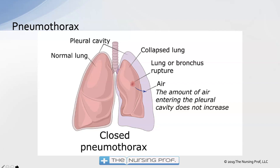What happens with a pneumothorax is we get some air into that pleural space. When air gets into the pleural space, we lose that vacuum that is pulling the lung open, so the lung is allowed to collapse. The normal state of the lung is collapsed — the reason it stays open is because of that negative pressure, that vacuum pulling it open from the outside. If we lose that vacuum in the pleural space, the lung will collapse. That's called a pneumothorax.